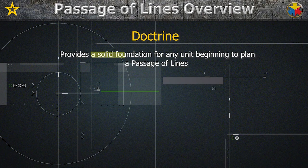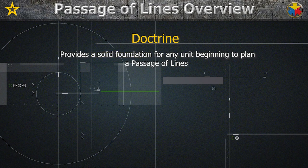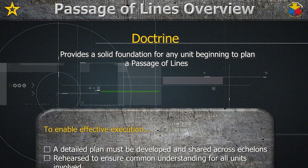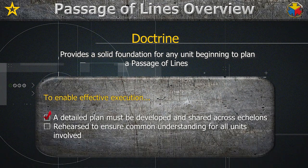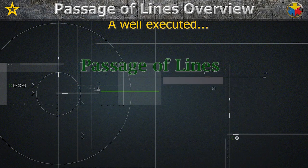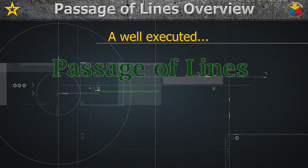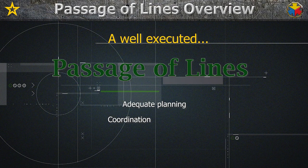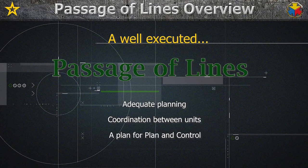Doctrine provides a solid foundation for any unit beginning to plan a passage of lines. To enable effective execution, a detailed plan must be developed and shared across echelons and then rehearsed to ensure common understanding for all units involved. A well-executed passage of lines includes adequate planning, coordination between units, and a plan for command and control.